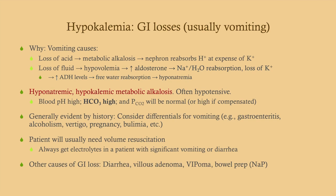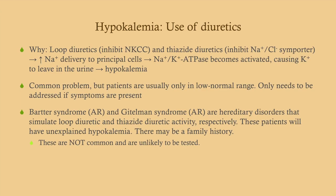Most of these patients will need volume resuscitation. Other causes of GI loss include bowel prep and sodium phosphate solutions. Diuretics inhibit either the NKCC channel (loop diuretics) or the NaCl symporter (thiazide diuretics), increasing sodium presented to the collecting duct, which is reabsorbed at the expense of potassium. Most diuretic patients are only mildly low in potassium and do not need treatment unless symptomatic.